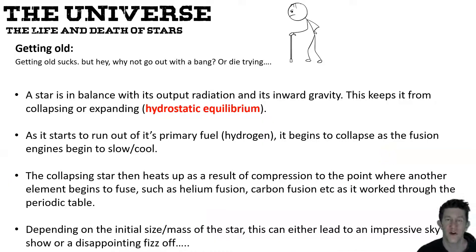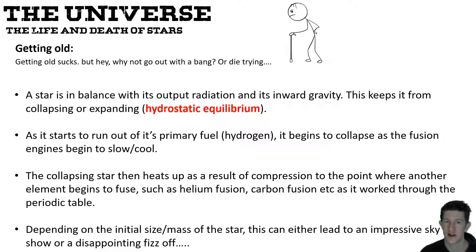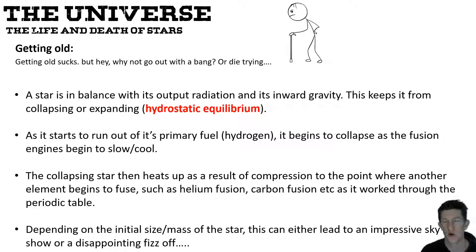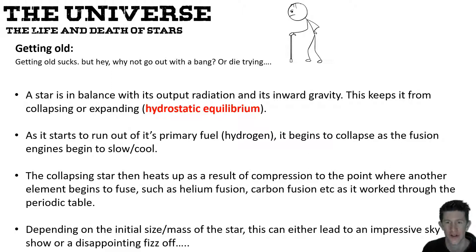We know a star is formed and spends most of its time on the main sequence, but what happens as it gets older? The key concept is hydrostatic equilibrium — a balance between the inward pressure of gravity trying to crush the star, and the outward force of the star's heat pushing it apart. Hot things expand, so the massive temperature pushes the star outward while the massive gravity tries to contract it.